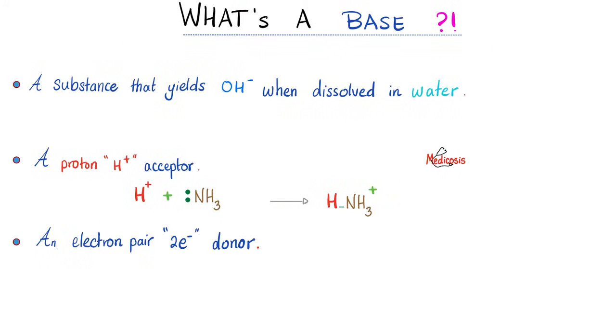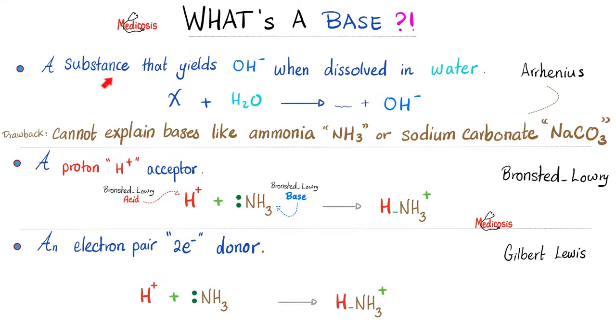Next, a base also has three definitions. A substance that yields hydroxide ions when dissolved in water. A base is a proton acceptor. A base is also an electron pair donor. But the electron pair acceptor is the Lewis acid. So the first definition is the Arrhenius definition. The problem with the Arrhenius definition is that it cannot explain bases like ammonia or sodium carbonate. Why? Because ammonia cannot give you hydroxide ion in water. Yet ammonia is still a base.